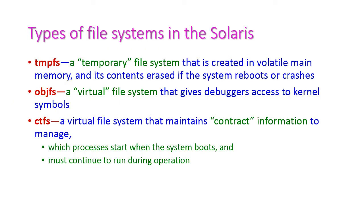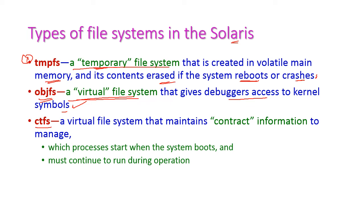The types of file systems in the Solaris operating system are as follows. First is tmpfs, the temporary file system, which is created in main memory. Its contents will be erased if the system crashes or reboots. Next is objfs, the object file system, which is a virtual file system that gives debuggers access to kernel symbols. Then there is ctfs, the contract information file system, a virtual file system that maintains contract information to manage which processes start when the system boots and must continue to run during operations.